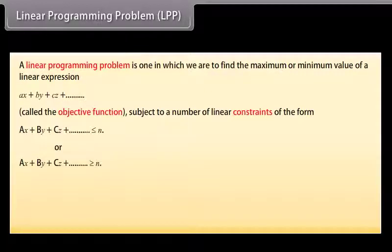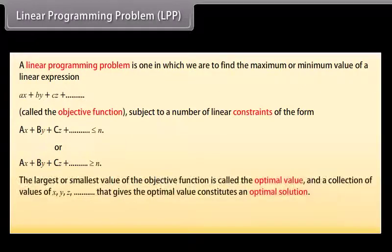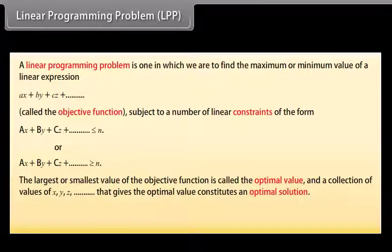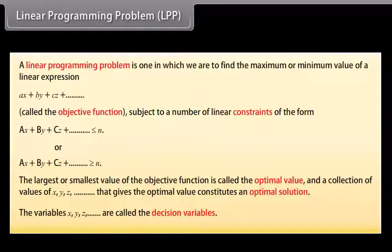The objective function is subject to a number of linear constraints of the form AX plus BY plus CZ and so on less than or equal to N, or AX plus BY plus CZ and so on greater than or equal to N. The largest or smallest value of the objective function is called the optimal value, and a collection of values of X, Y, Z and so on that gives the optimal value constitutes an optimal solution. The variables X, Y, Z and so on are called the decision variables.